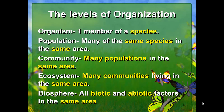If you have a family of lions — a male, a female, and their cubs — that's a population because it's many of the same species. A community would be many populations all in the same area. An ecosystem is many communities living in the same area. And a biosphere is all the biotic and abiotic factors in the same area interacting with one another.